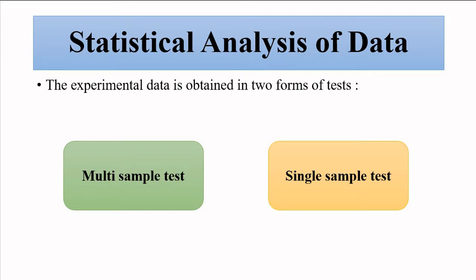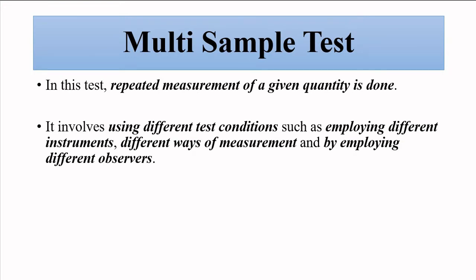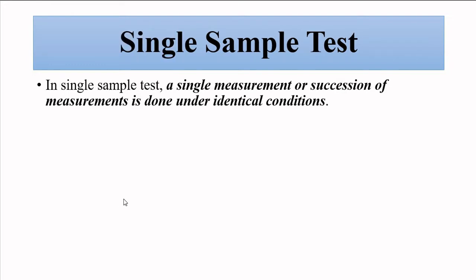The data obtained from tests is of two types: multi-sample test and single-sample test. In a multi-sample test, a parameter is measured multiple times repeatedly using different test conditions — different instruments, different environmental conditions, and different observers.